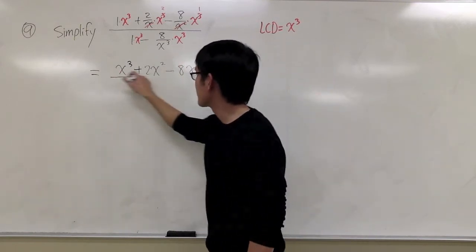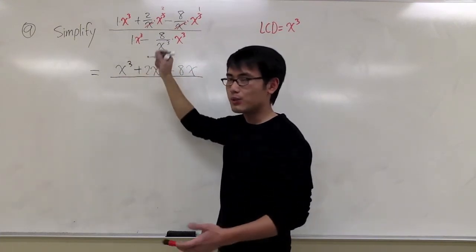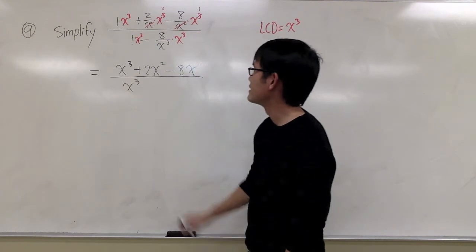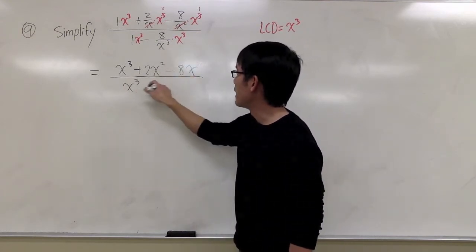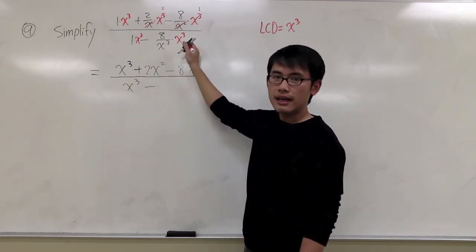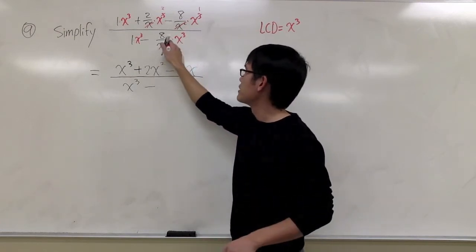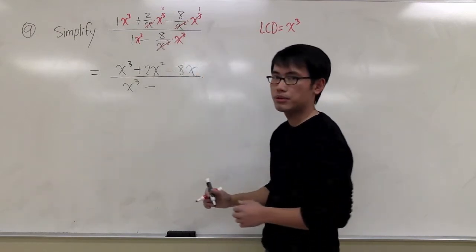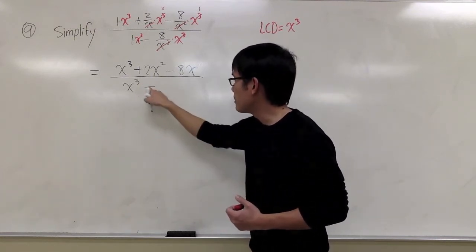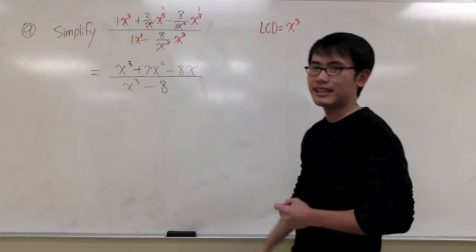On the bottom: over 1 times x to the third power, we just get x to the third power. And that will be minus the x to the third power, with x to the third power on top — exactly the same, so I can cancel them out completely. That gives x to the third power minus 8.